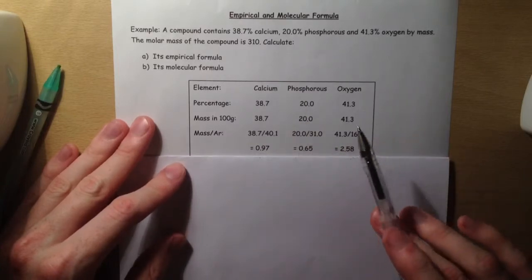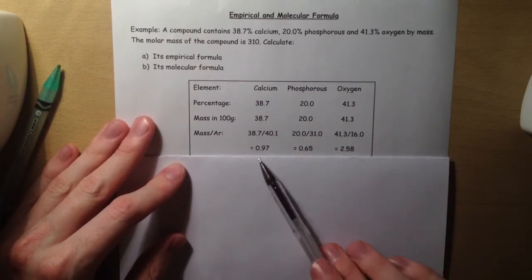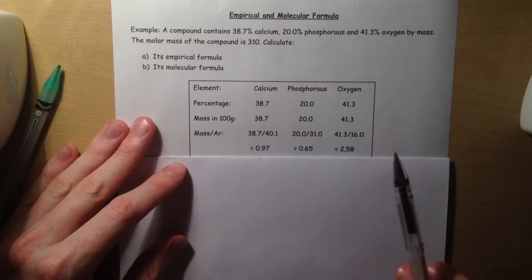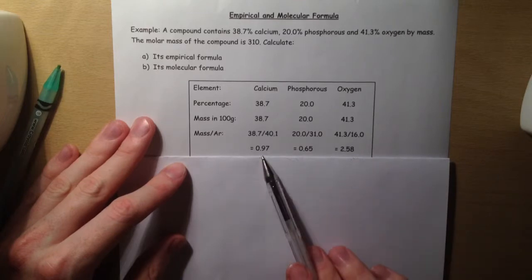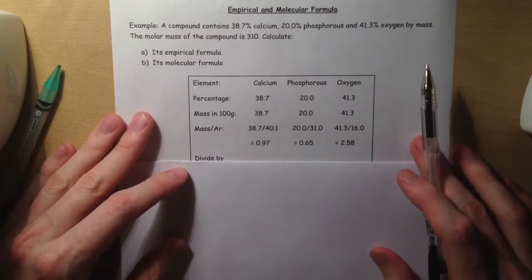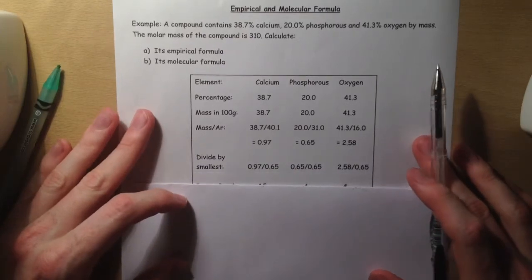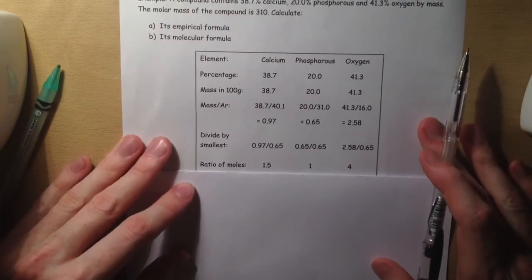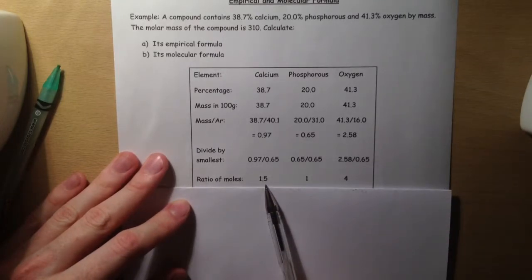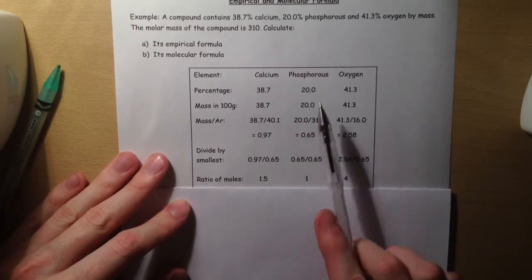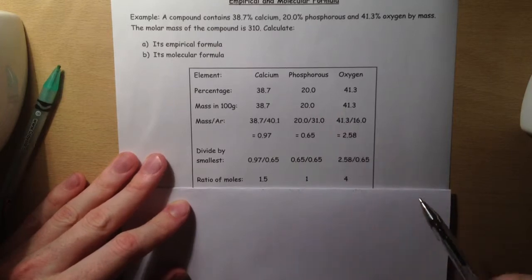In order to find out what ratio we have these things in, we're going to divide each of these three values by the smallest value present. In this case, that's 0.65. When we do that, we get our ratio of moles: 1.5 moles of calcium, 1 mole of phosphorus, and 4 moles of oxygen.